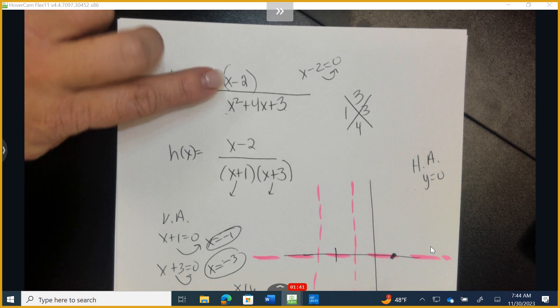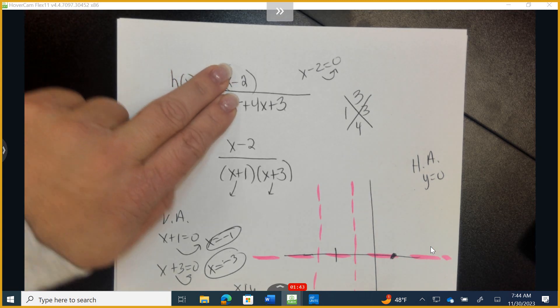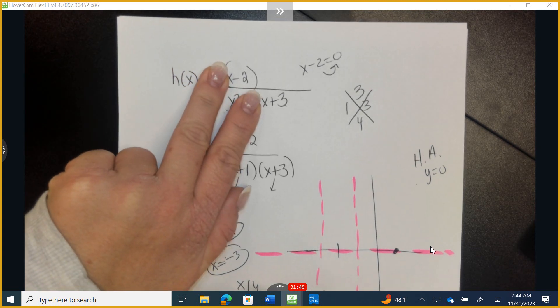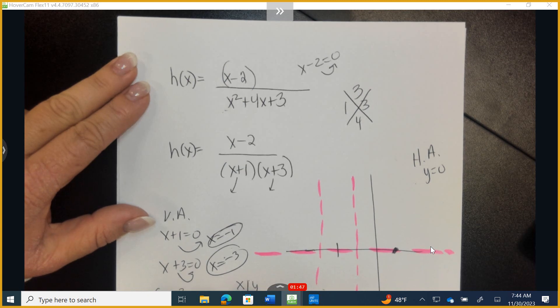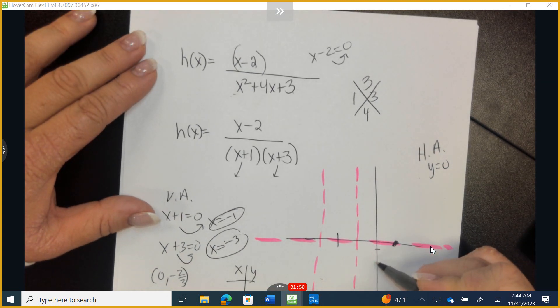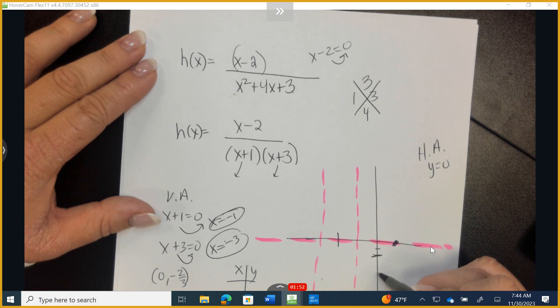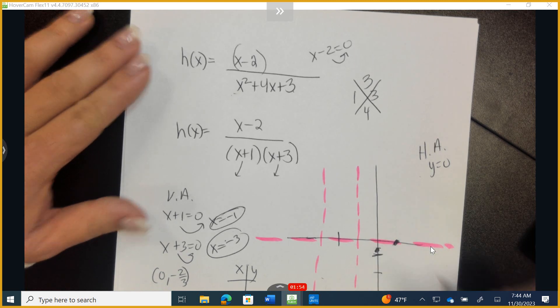I'm going to figure out what the y-intercept is. So if I plug in 0, I get 0 and 0. I get a negative. So it's 0 and -2/3. -2/3 would be right about here.